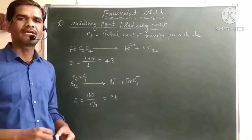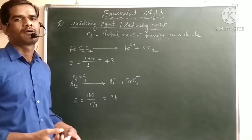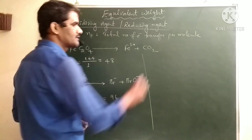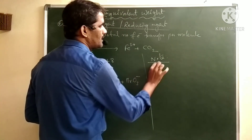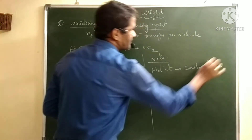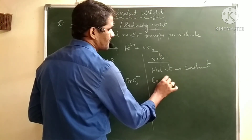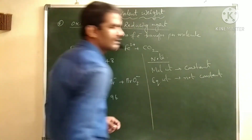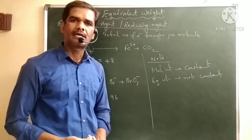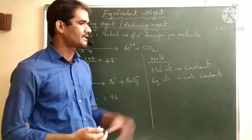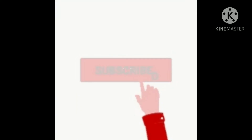These are some calculations of equivalent weights of various atoms, ions, molecules, and oxidizing and reducing agents. An important note: molecular weight of a substance is always constant, but equivalent weight of a substance is not constant. It may be equal to, less than, or more than the molecular weight — it is variable and depends on the reaction conditions. If you like this video, please like, share, and subscribe to my channel.